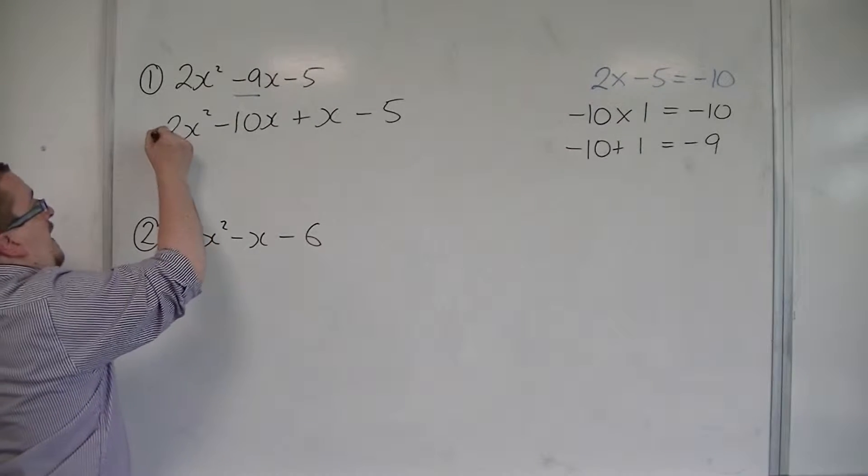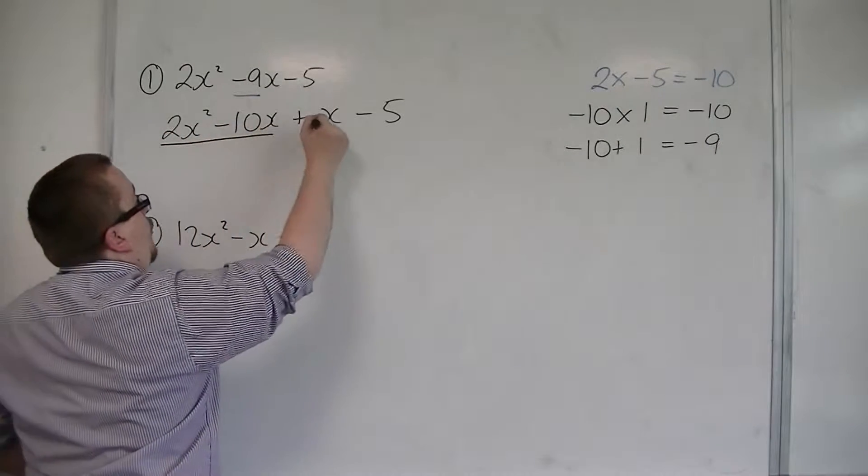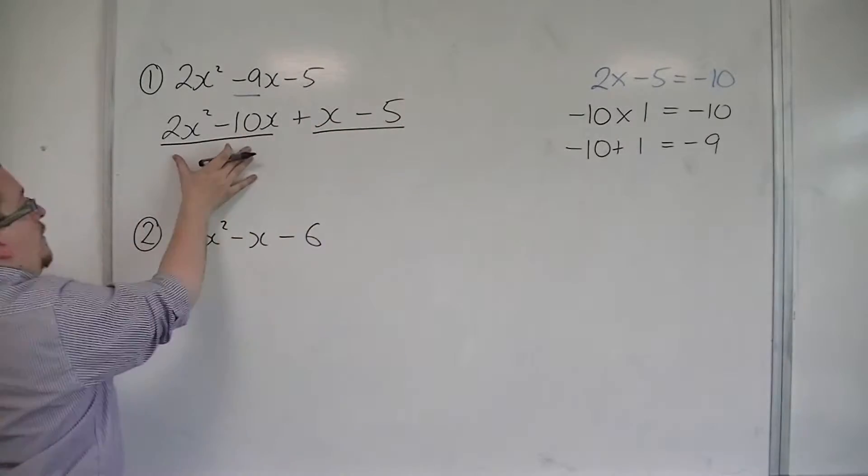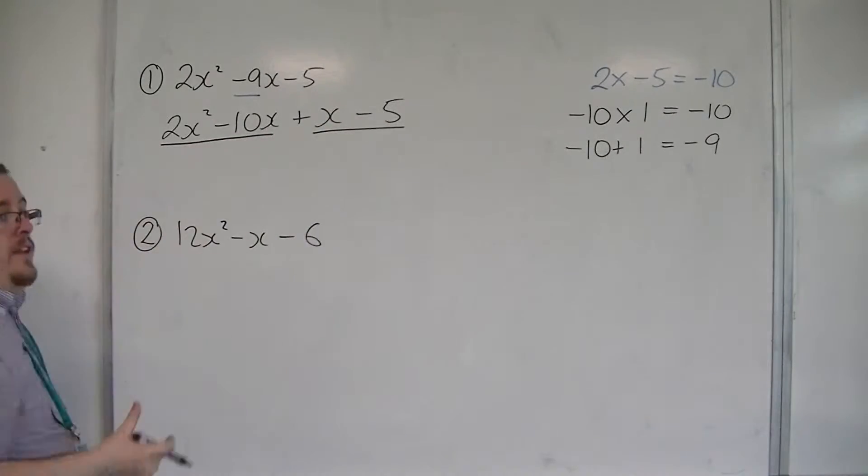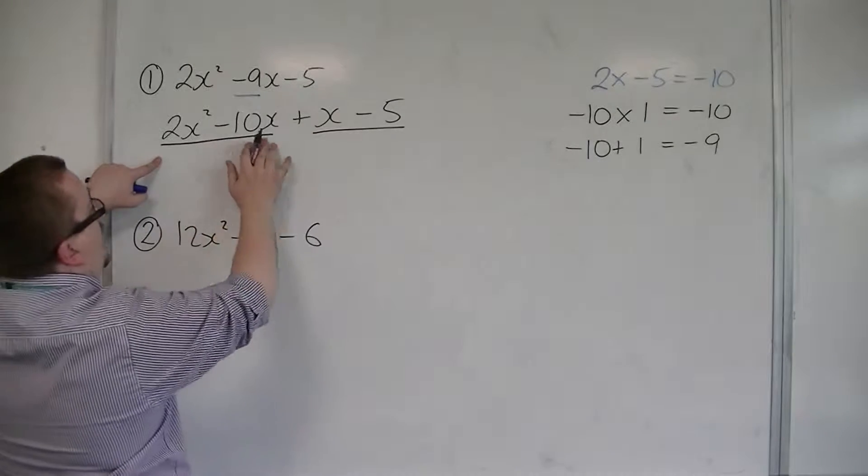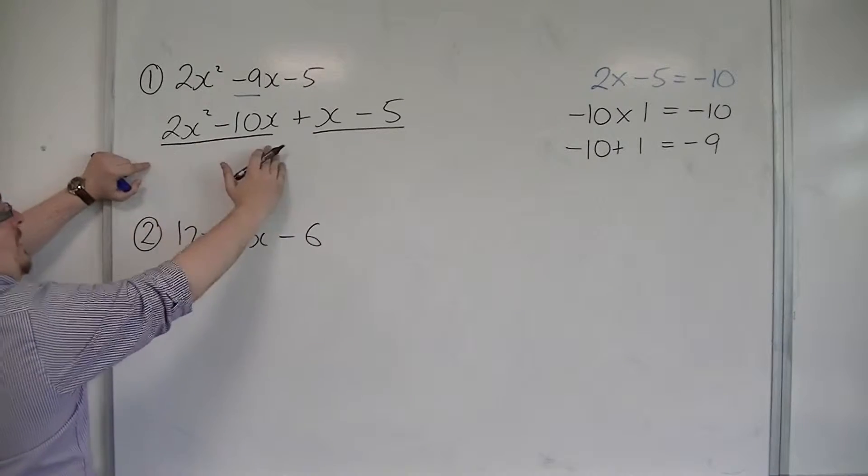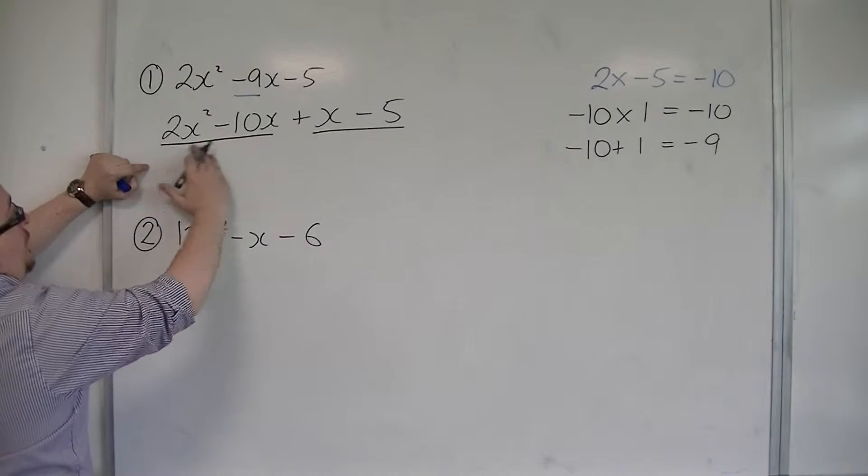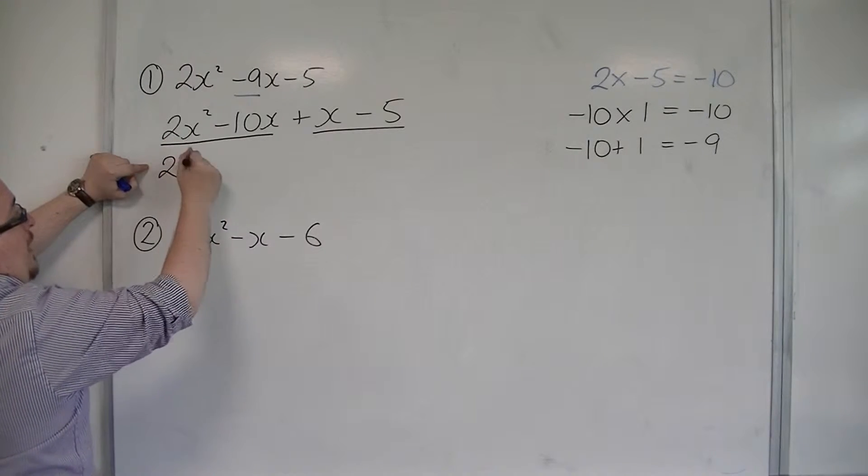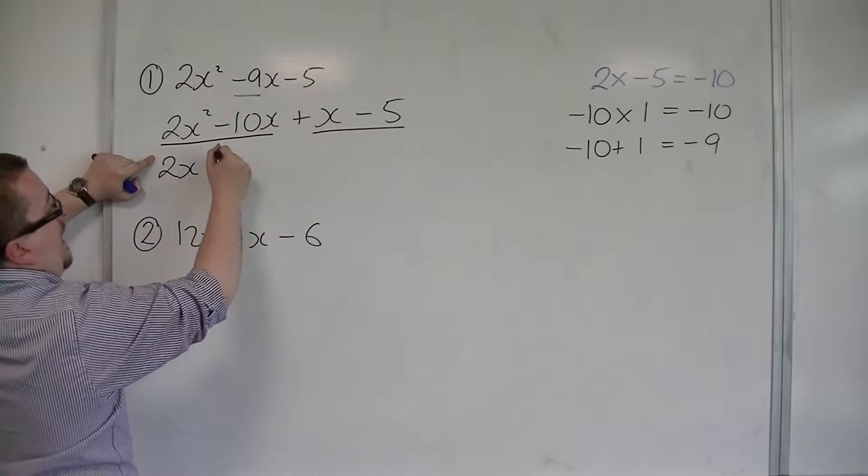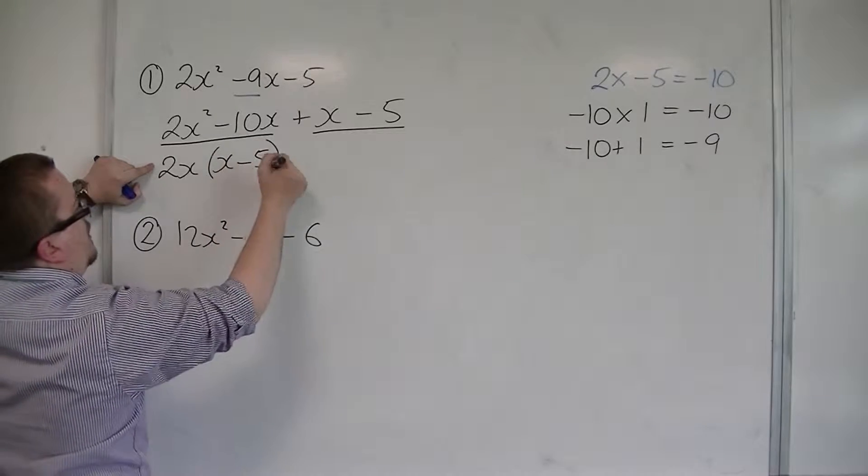So this second step involves looking at two halves of this expression. So we have the 2x squared minus 10x. And what I want to do is factorise that. And so I would have to have 2x outside of the bracket and x minus 5 inside the bracket.